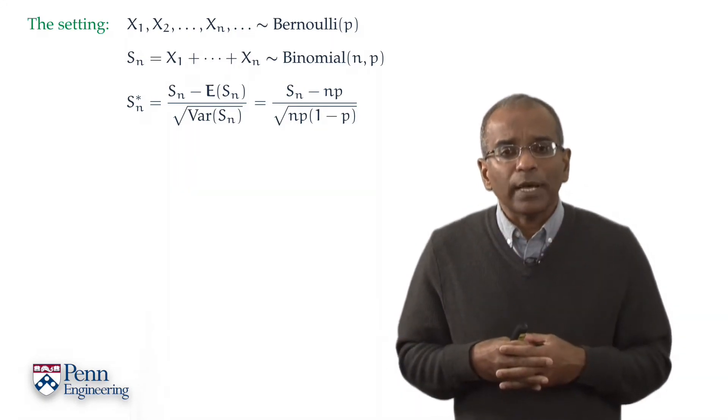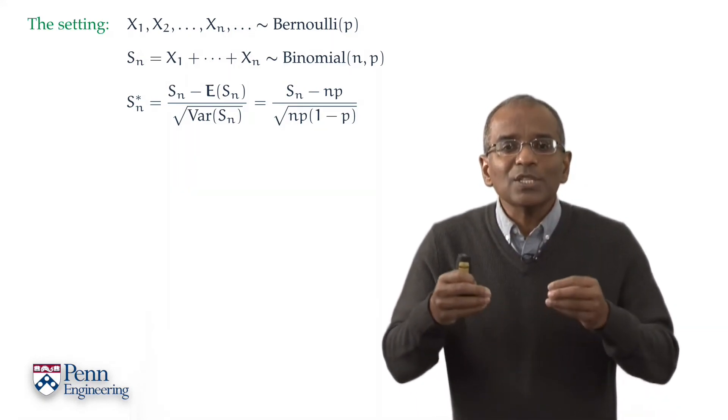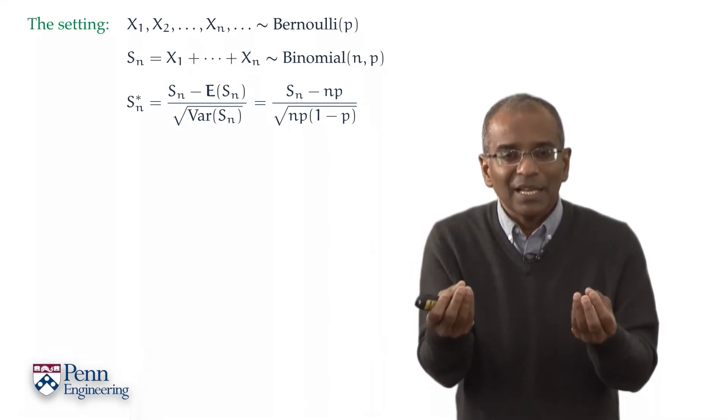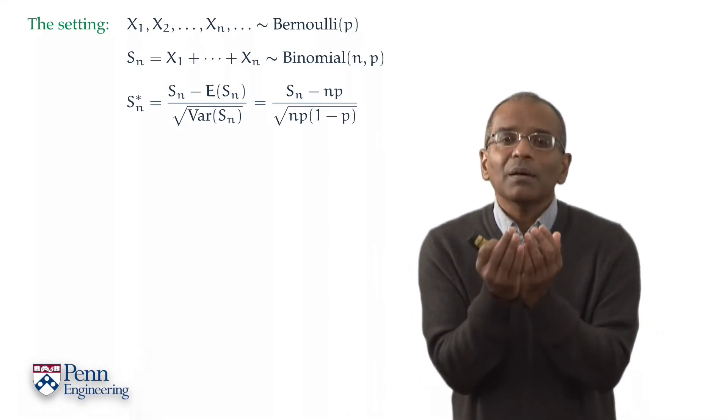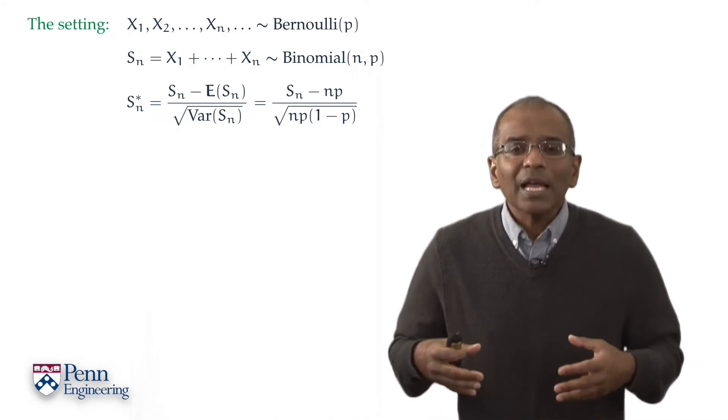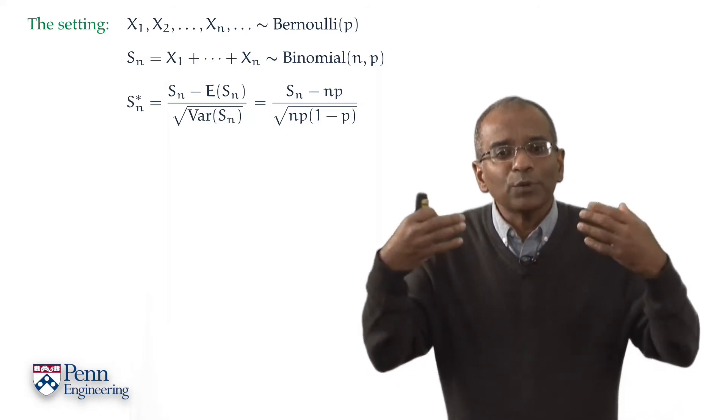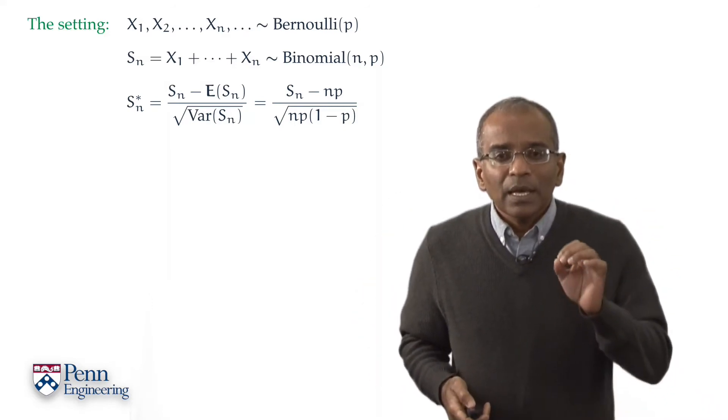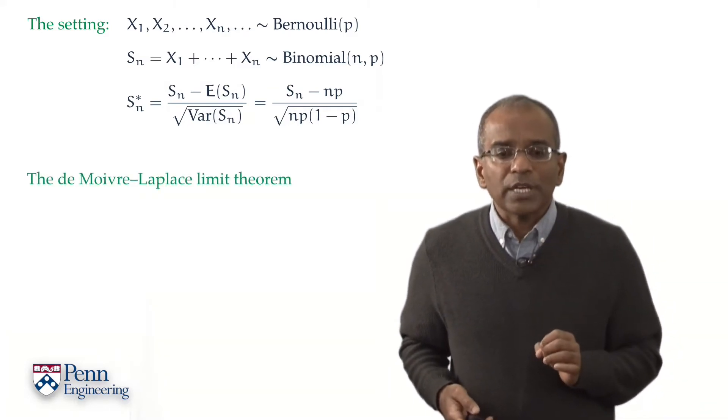The theorem of de Moivre and Laplace deals with this normalized variable. You will admit justly that all we have done is properly centered the distribution and viewed it in the proper scale so that we could view all of them on the same framework.